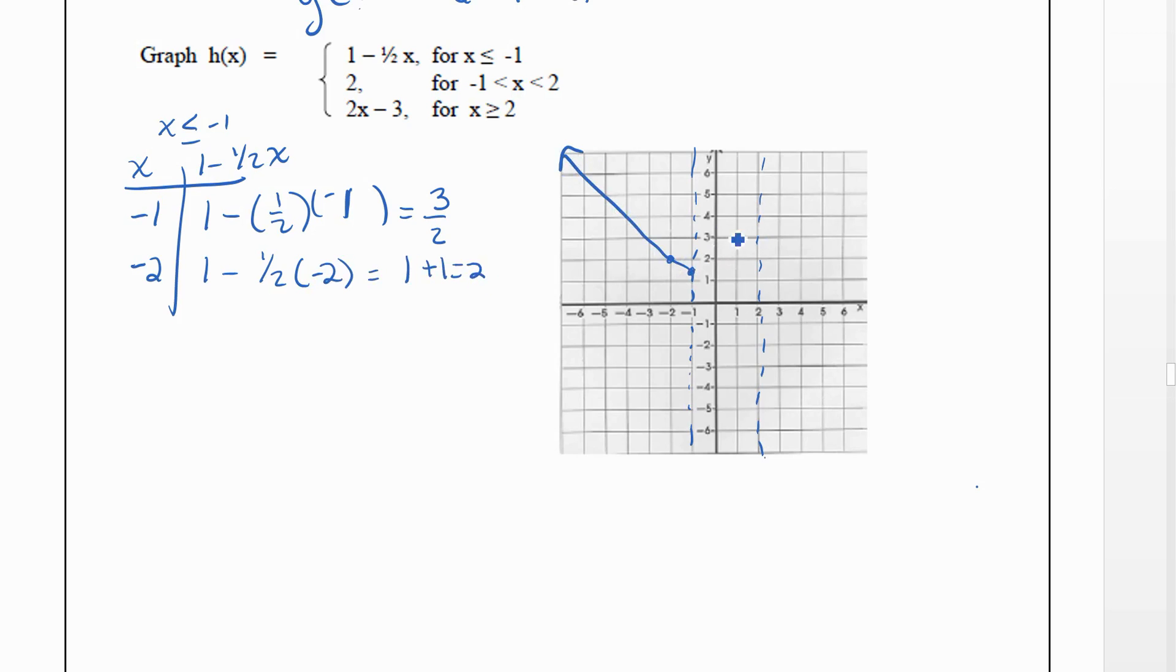Now in between our two dotted lines, -1 and 2, but not including those, we're going to be at 2. So we're going to be up here at 2. Since it's -1 less than x less than 2—they're both less thans and don't have the equal to part—we're going to use open dots.